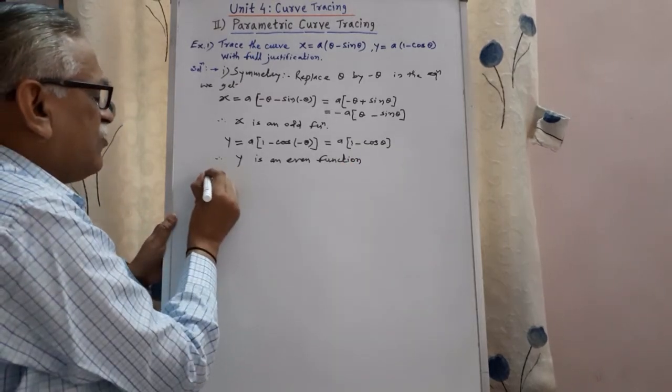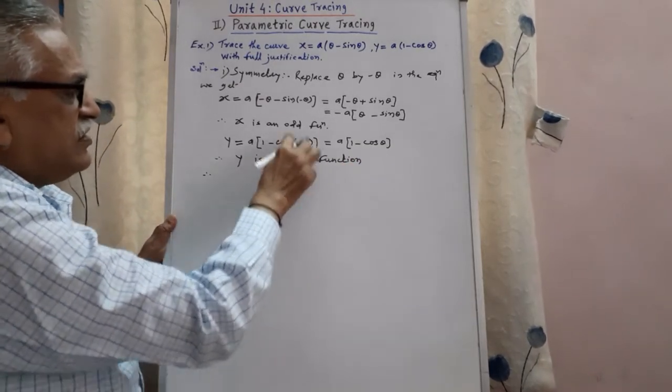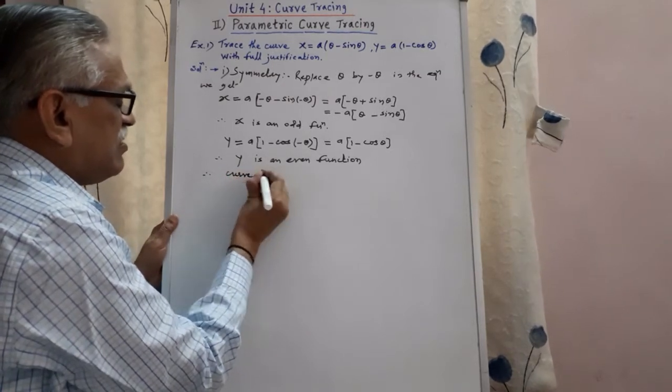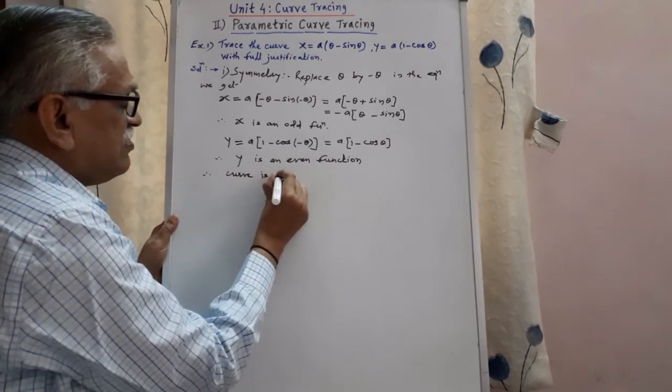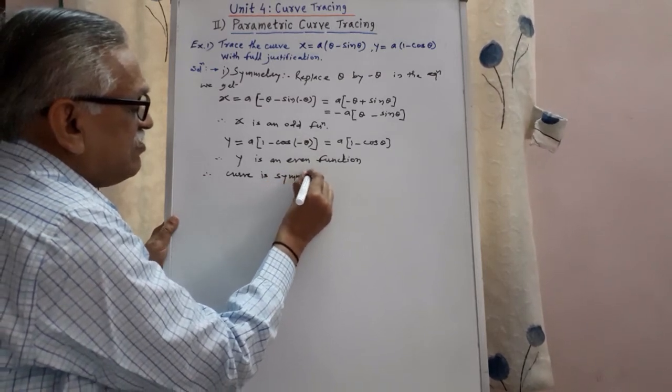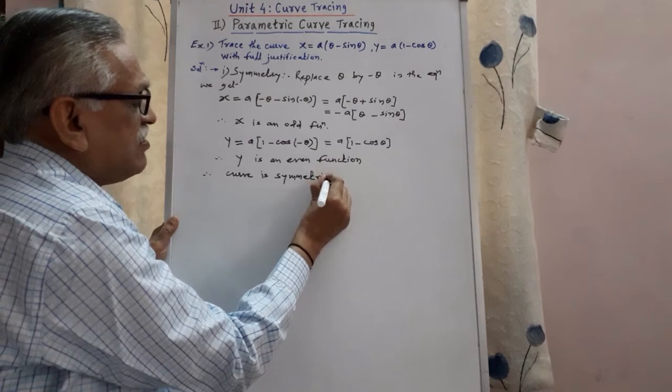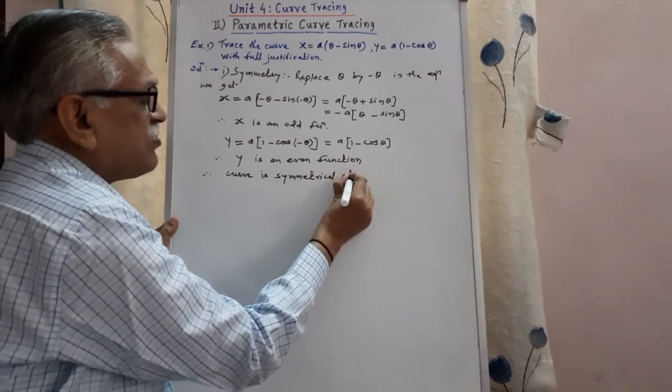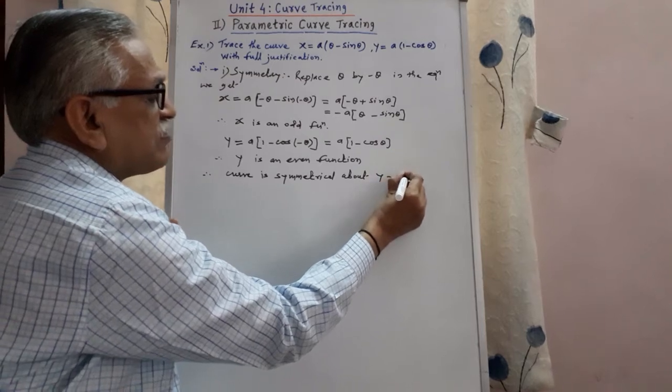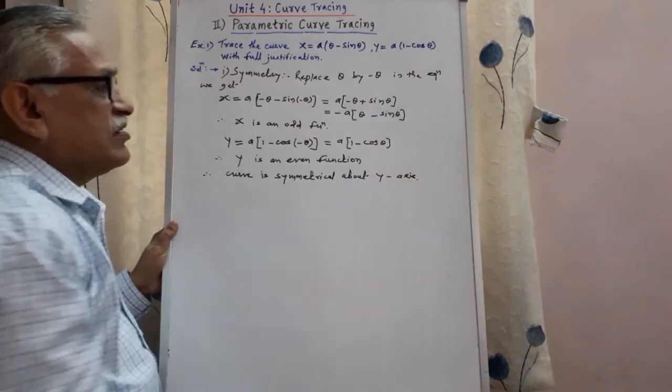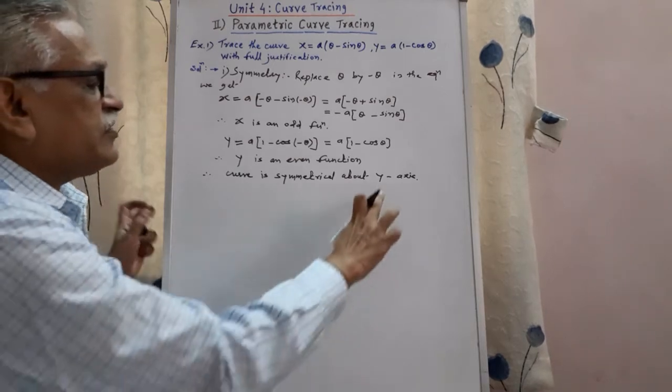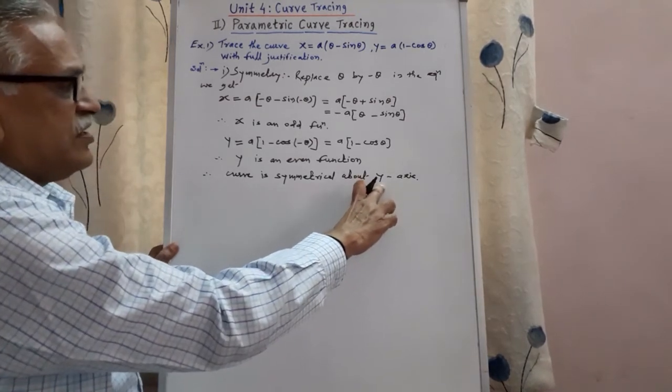And therefore, as y is even, x is odd, therefore curve is symmetrical, curve is symmetrical about y-axis. Whatever the curve we have to complete, we have to trace, it must be symmetrical to y-axis, first point.